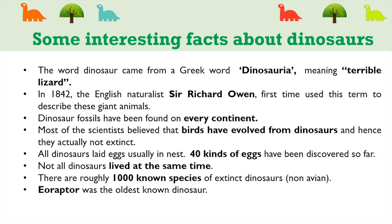Dinosaur fossils have been found on every continent. Most scientists believe that birds evolved from dinosaurs, and hence dinosaurs are not actually fully extinct. All dinosaurs laid eggs, usually in nests, and 40 kinds of eggs have been discovered so far. Not all dinosaurs lived at the same time. There are roughly one thousand known species of extinct dinosaurs, called non-avian dinosaurs.